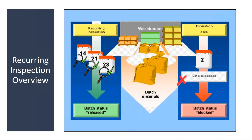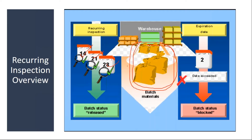What happens is you have the materials in your warehouse which are batch managed. You define an interval — for example, after every week. After every week, the system will automatically generate an inspection lot to do the quality inspection, till the total stock of that batch is consumed. You are doing multiple times inspection — this is recurring inspection.